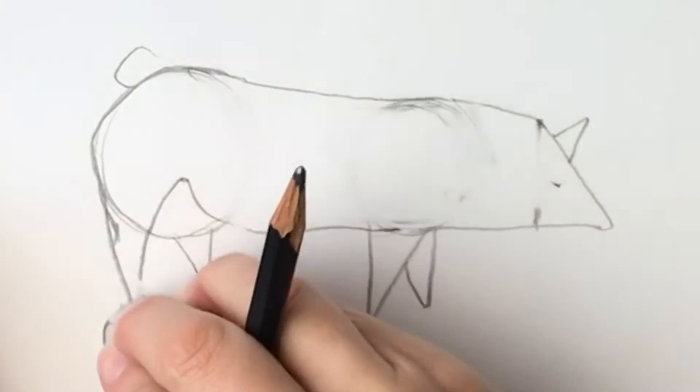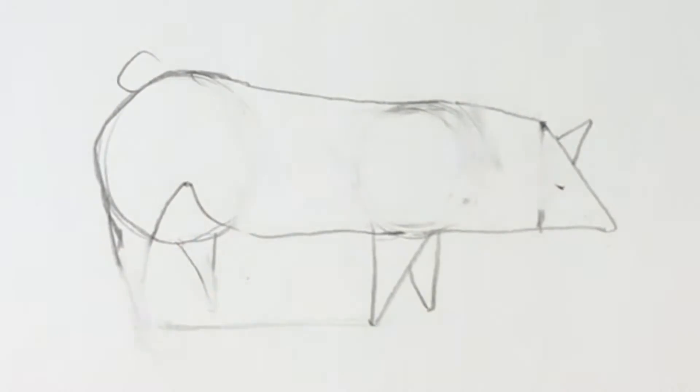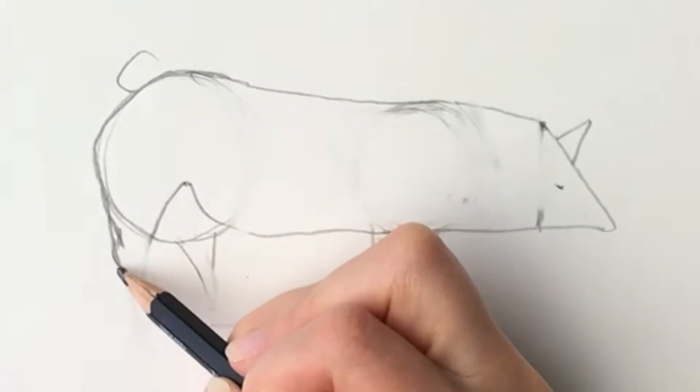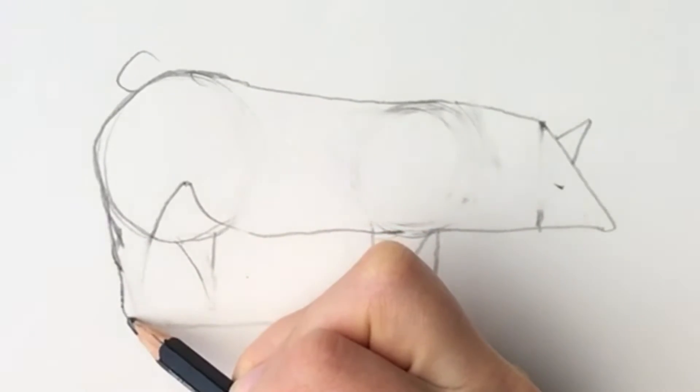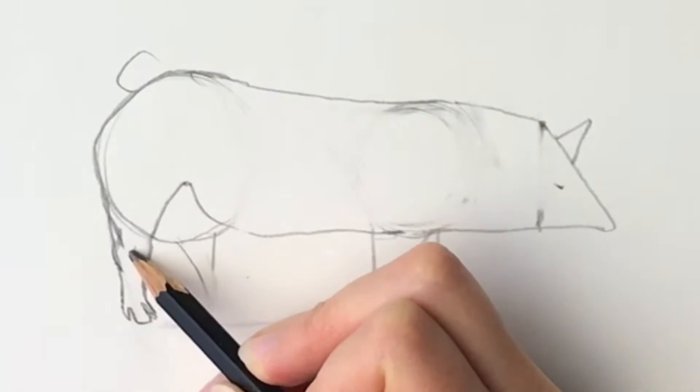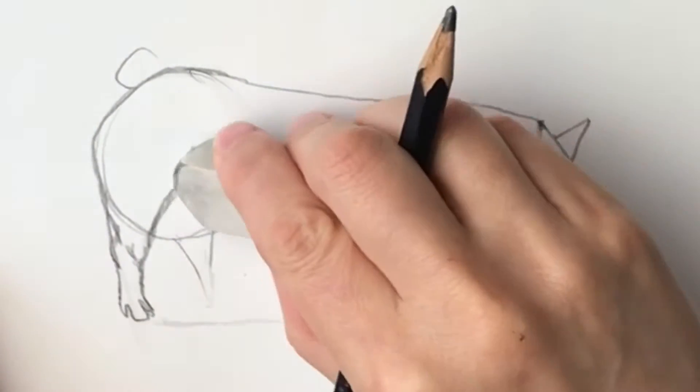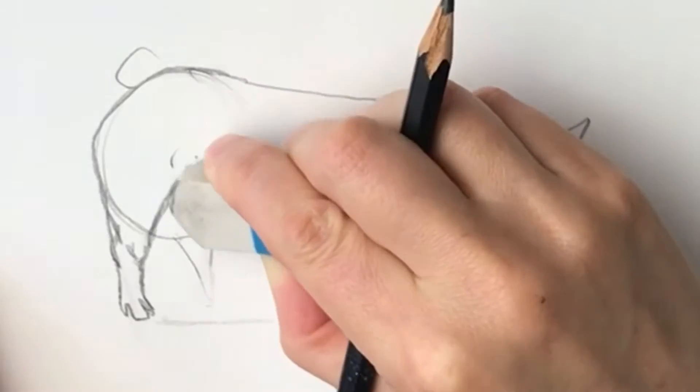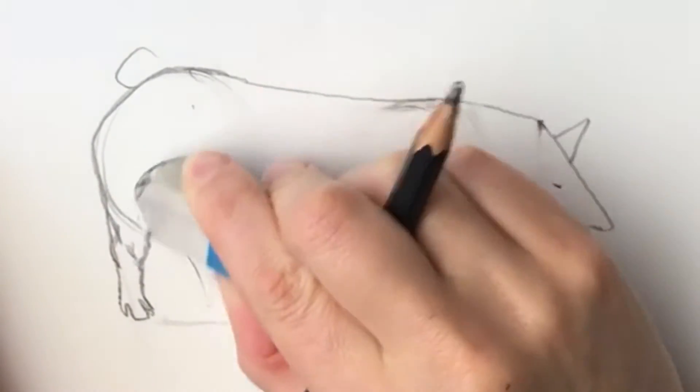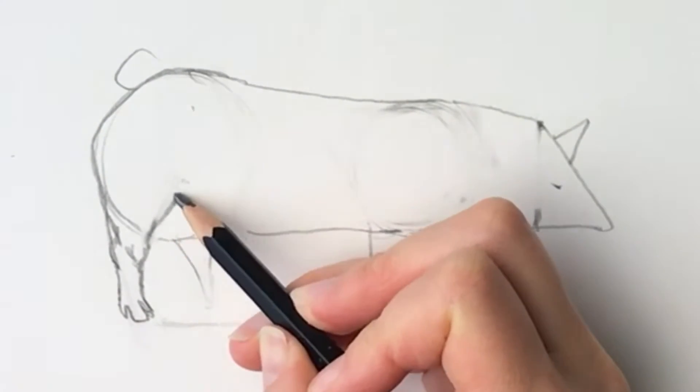And then the legs obviously aren't going to look like stilts. I'm going to erase them. And we draw some muscle in there. And then the little trotters. There's one there. The front part. A little knee. And then it comes forward. So bring it around to there.